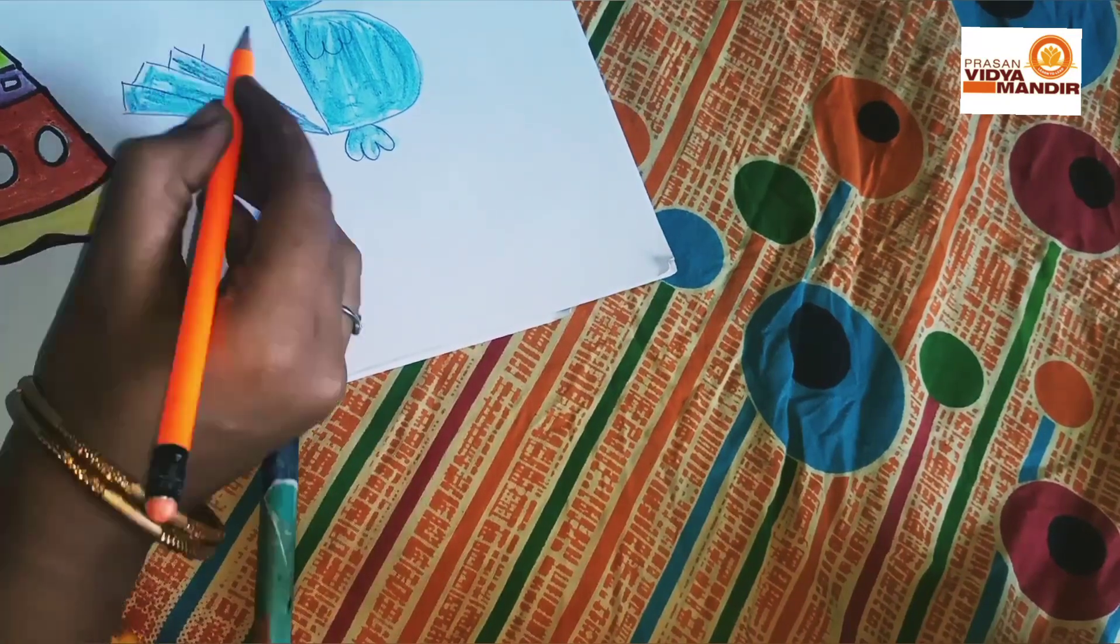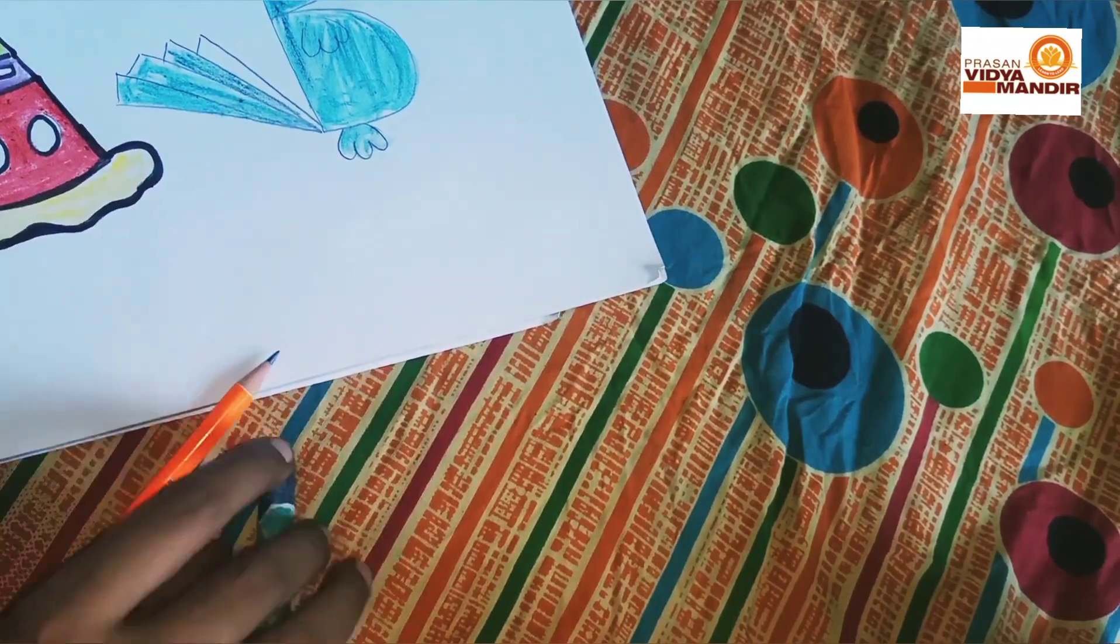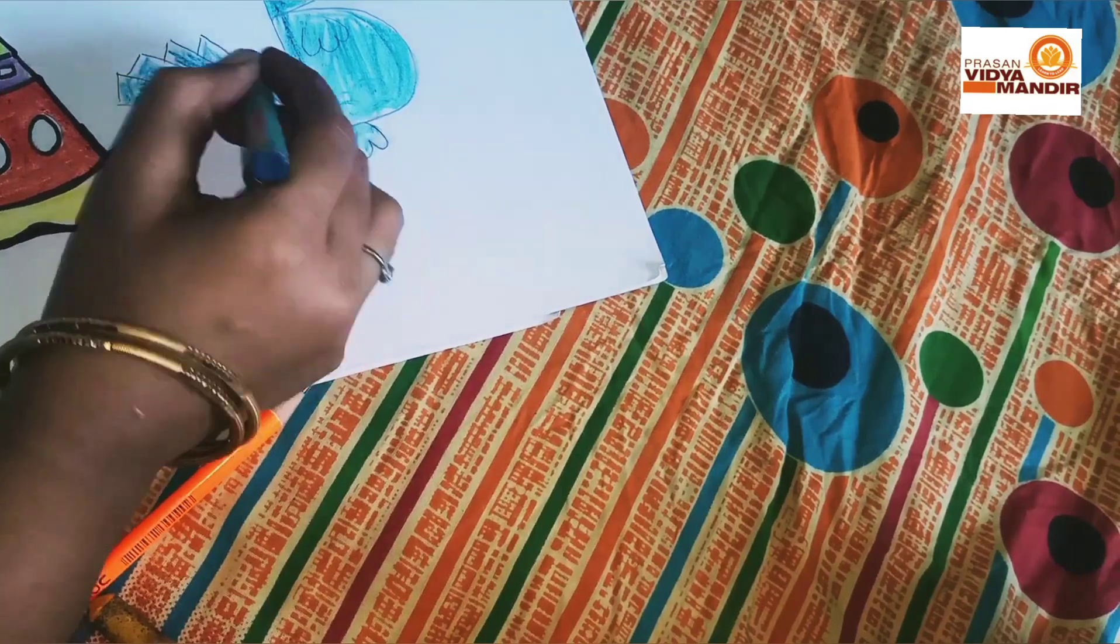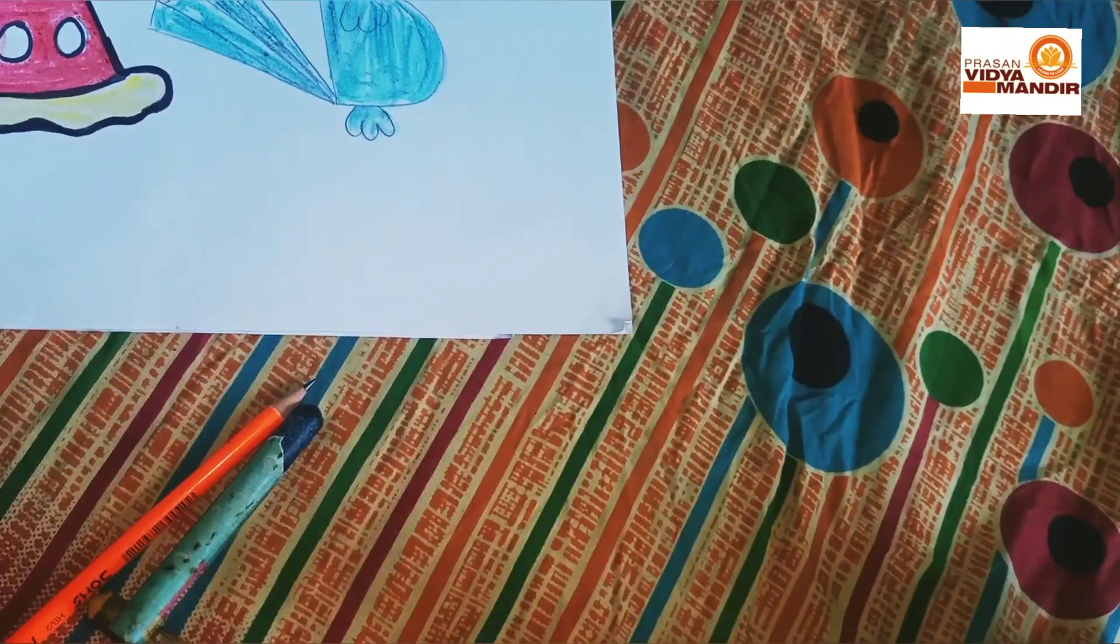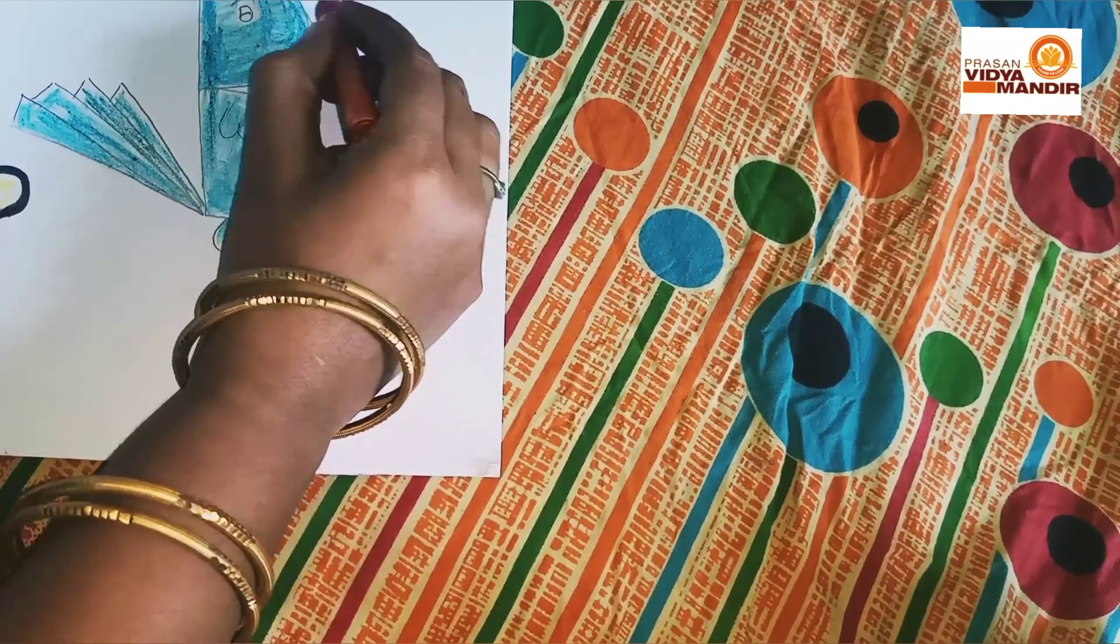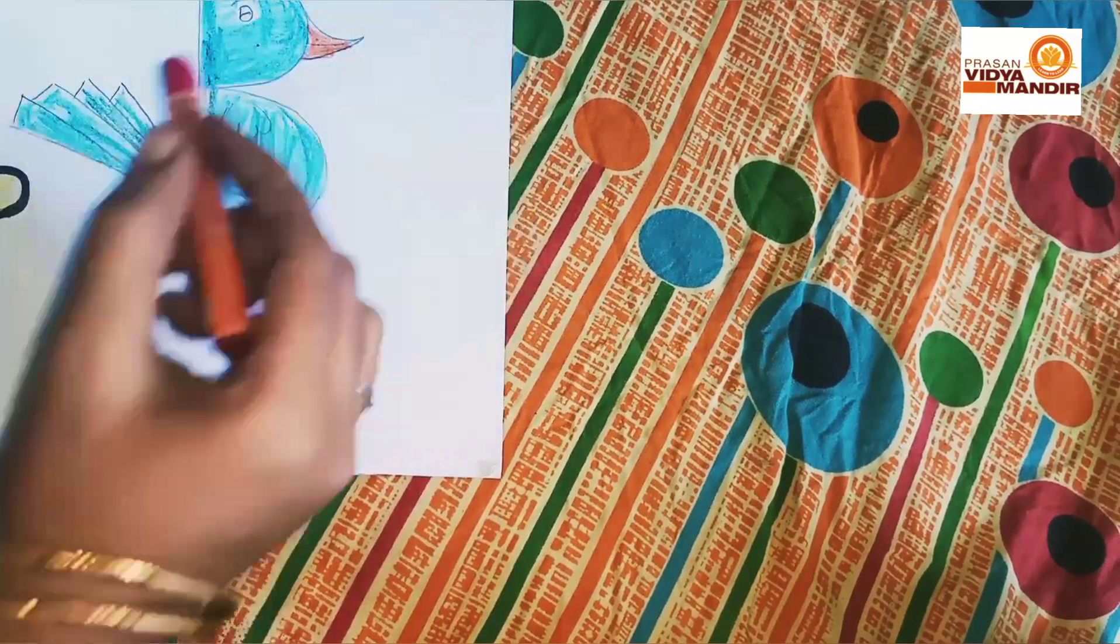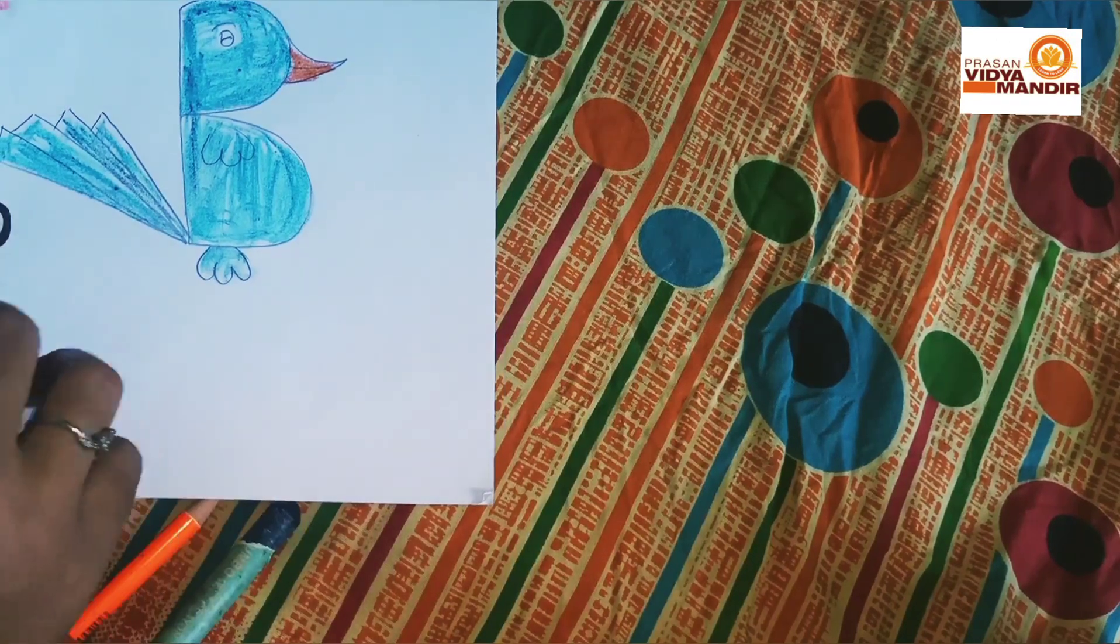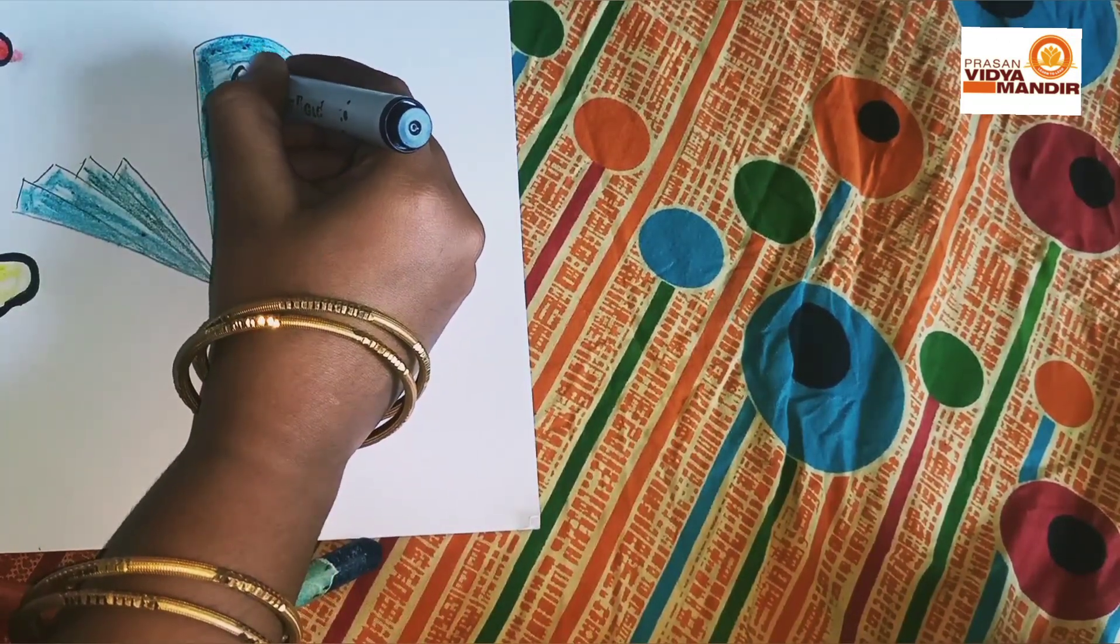If you need extra feathers, you can add them, children. Then I give the nose red color and after I give the outline.